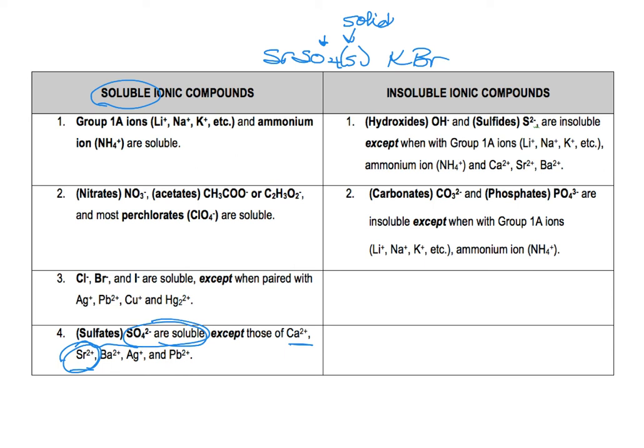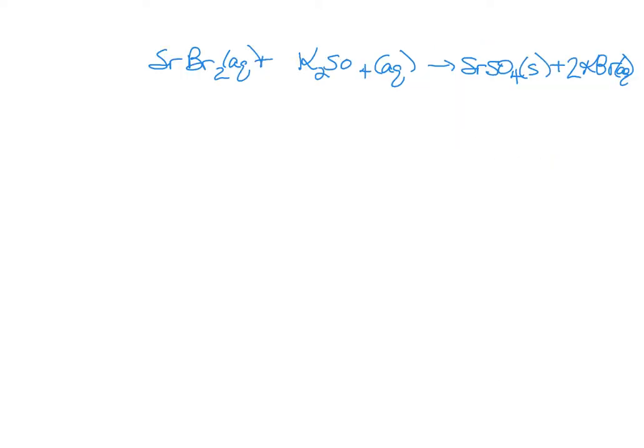Now, KBR. Hopefully, you'll get used to recognizing those quickly. Any ionic compound that has a group one metal as the cation is automatically soluble. No exceptions. So, KBR is soluble.